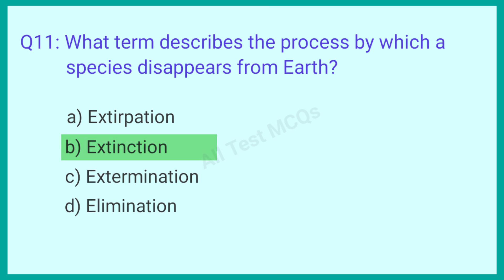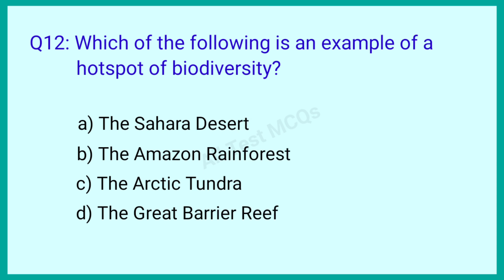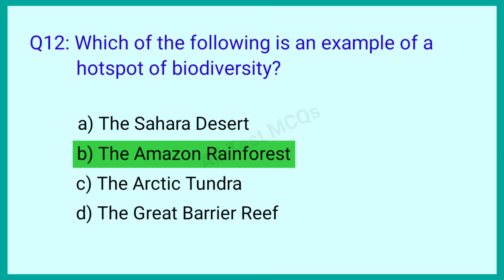Question number 12: Which of the following is an example of a hotspot of biodiversity? The correct answer is option B: The Amazon rainforest.